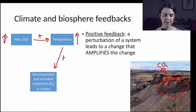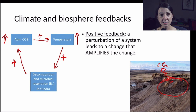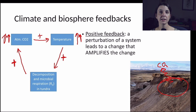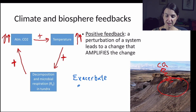So increasing temperature is expected to have a very big impact on decomposition in the tundra. As a result of microbial respiration releasing CO2 into the atmosphere, we expect to see a positive effect on the release of CO2, thus leading to a further increase in atmospheric CO2 and a further increase in temperature. Unlike negative feedbacks, when we have positive feedbacks between climate and an ecosystem, this tends to exacerbate or make worse the effects of fossil fuel burning on the climate.